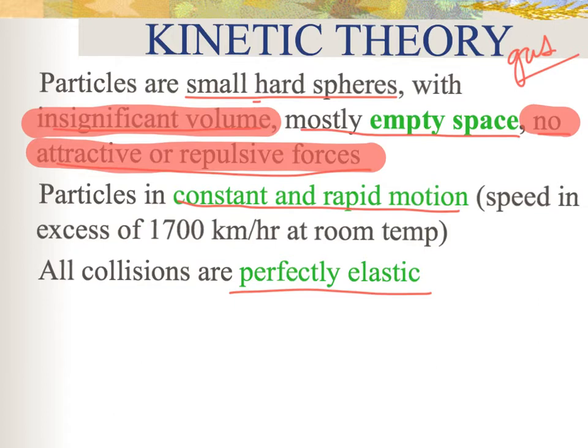Everything else stated in the theory is true: yes, the particles are small hard spheres and occupy mostly empty space; they are in constant, rapid, and random motion; and their collisions are perfectly elastic. So you should know what the theory states and also know what is wrong with it.